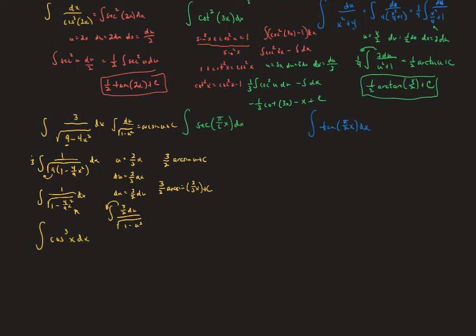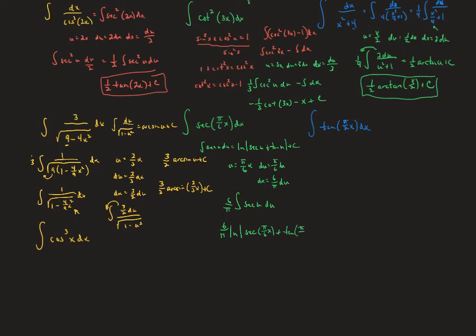For the integral of secant, recall that the integral of secant u du is the natural log of the absolute value of secant u plus tangent u plus c. For the integral of secant of pi over 6 x, let u equal pi over 6 times x, so du is pi over 6 dx and dx is 6 over pi du. This gives 6 over pi times the natural log of the absolute value of secant of pi over 6 x plus tangent of pi over 6 x, plus c.